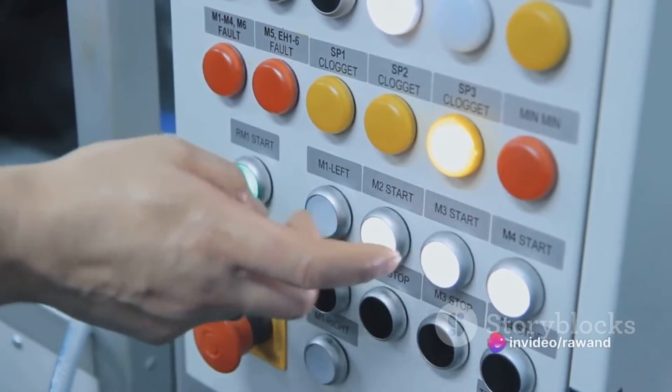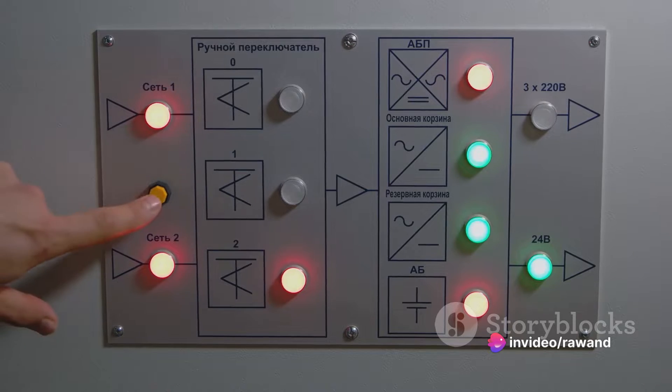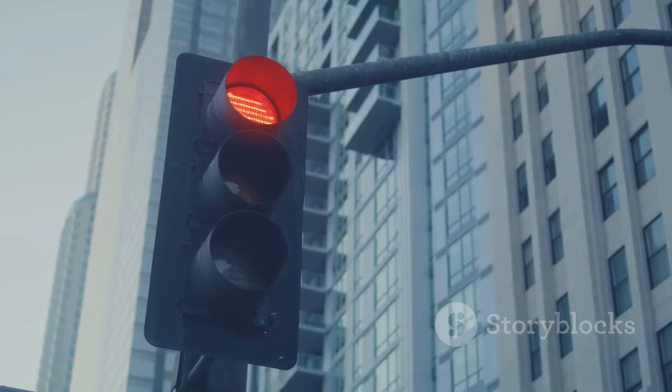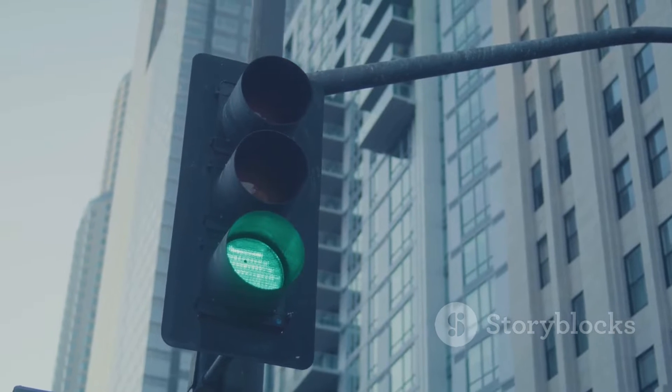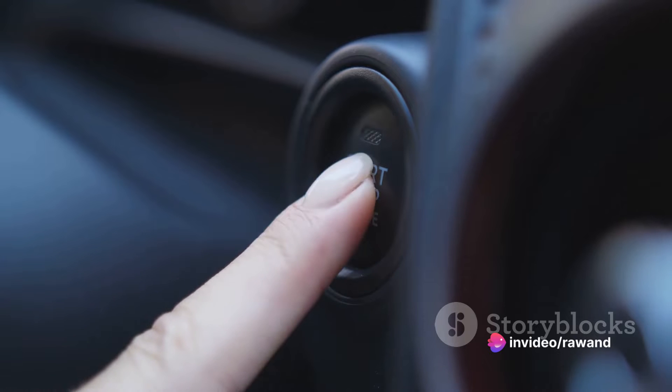Control theory has a fascinating history, having evolved from simple feedback mechanisms to sophisticated learning-based control systems. The journey begins in the early 20th century, where the invention of feedback control marked a significant turning point. It was an era where engineers began to understand the importance of using the system's output to adjust its behavior.